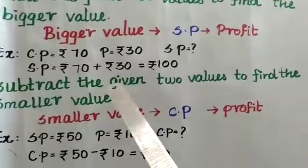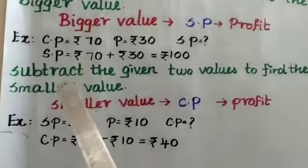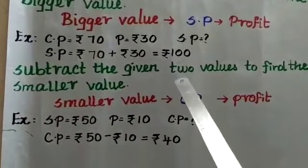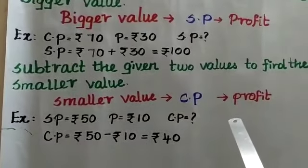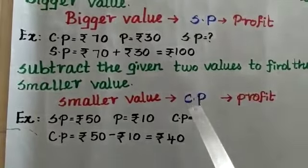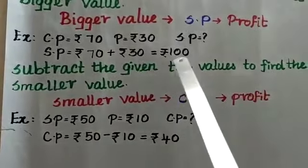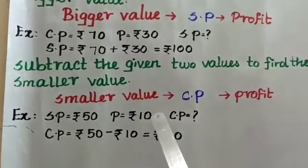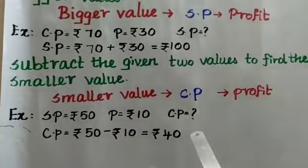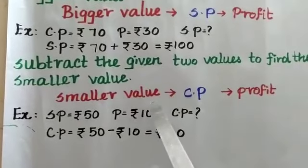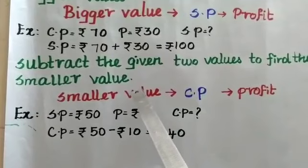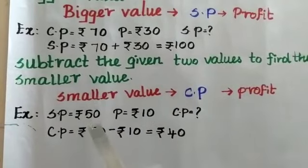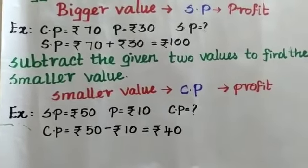Subtract the given two values to find the smaller value. Whenever we are going to find the smaller value, we should subtract the given two values. The smaller value in profit is the cost price. So whenever we are finding the cost price in profit, we should subtract the given two values. For example, selling price is Rs. 50 and profit is Rs. 10. Cost price is the smaller value, so we do the subtraction. When we subtract 10 from 50, we will get the cost price as Rs. 40.